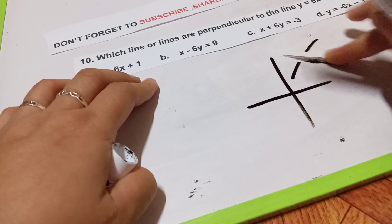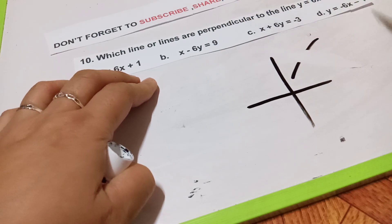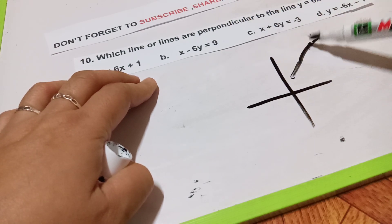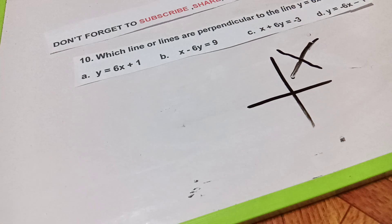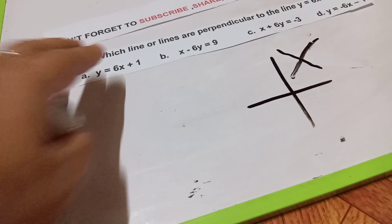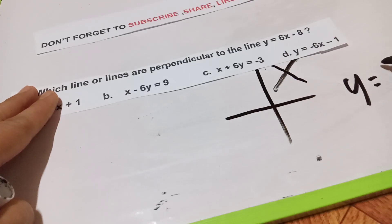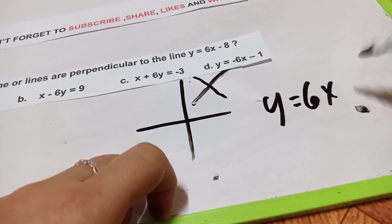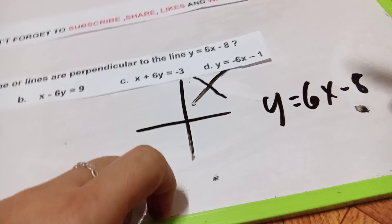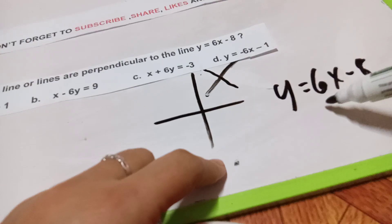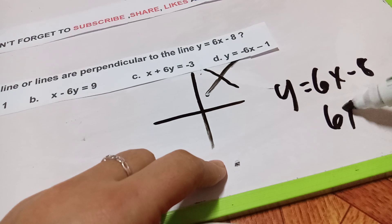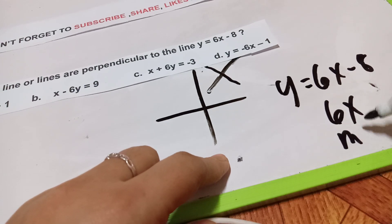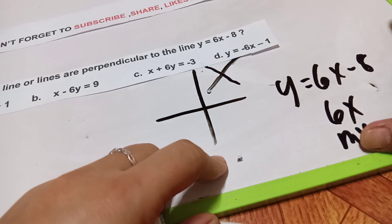It is the opposite of this line, or the line is already in a cross. Our equation is y = 6x minus 8. All you have to do is get the reciprocal. This is our m of x, or this is the slope.